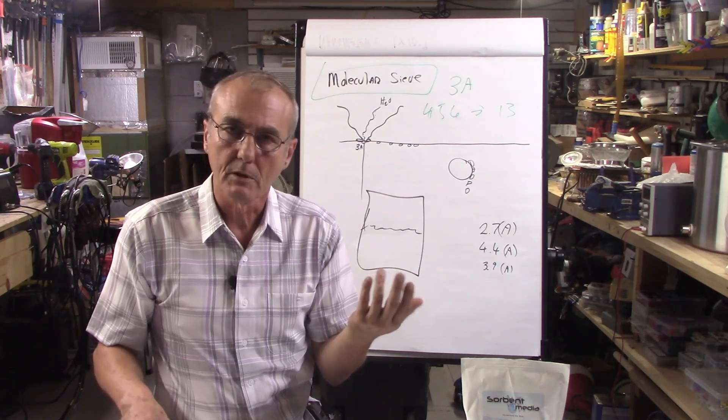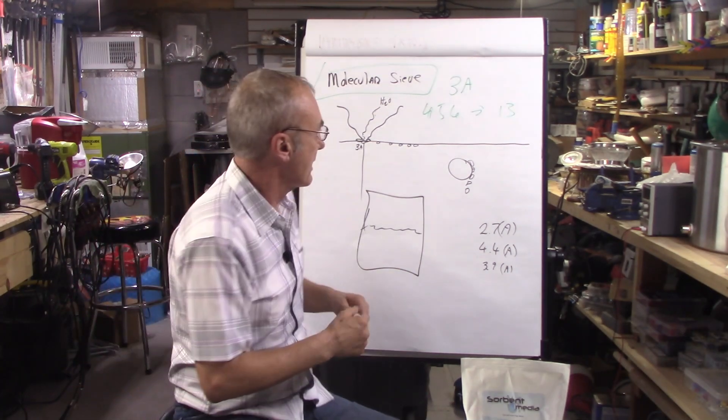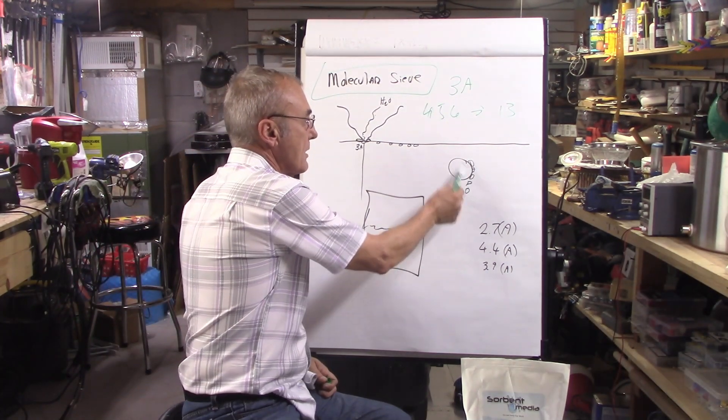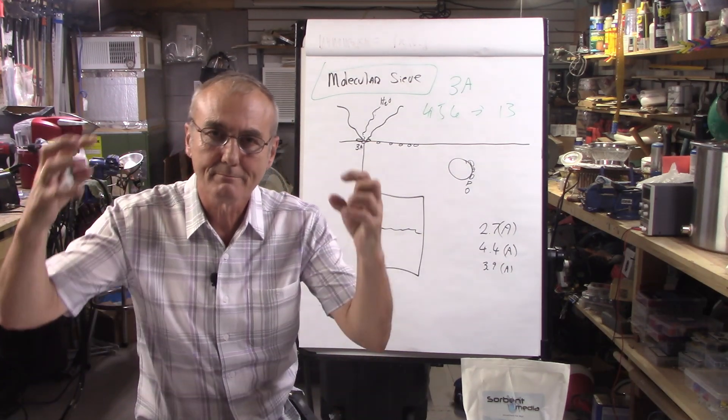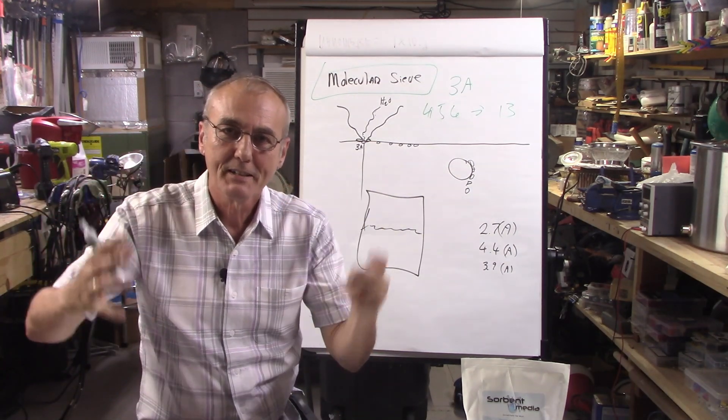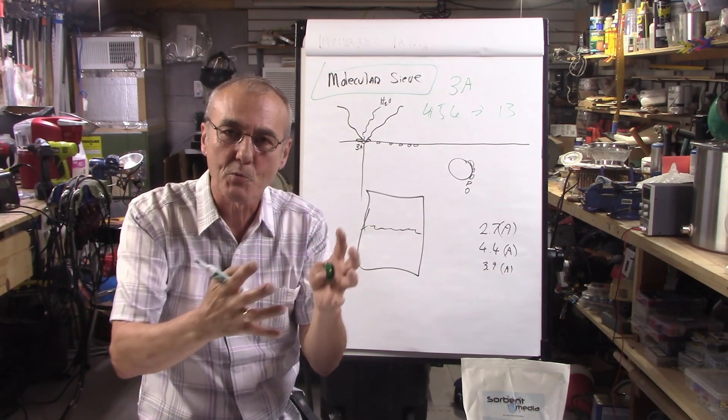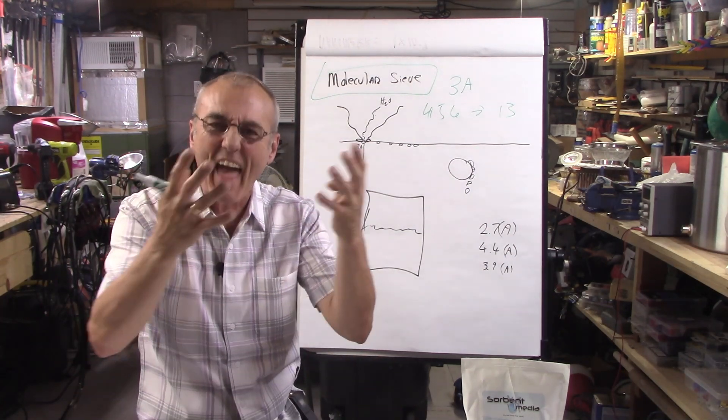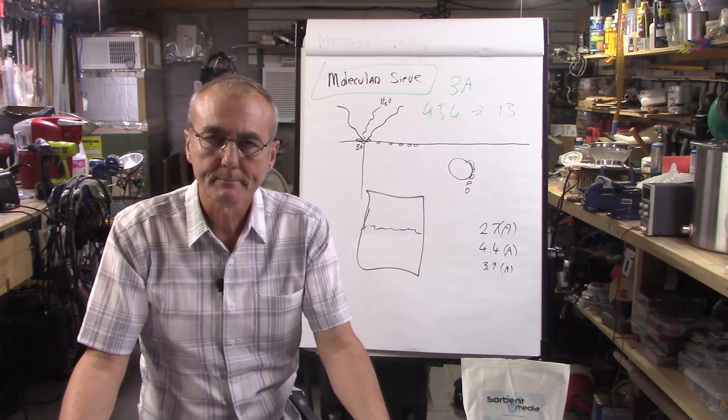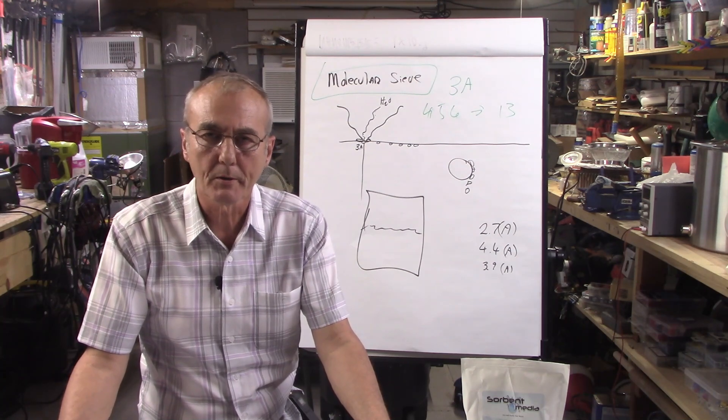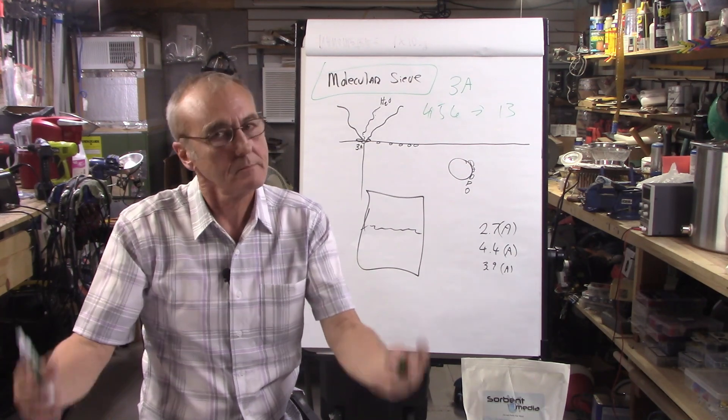Once you pour it off and strain it, you're going to have some molecules that are going to remain on the outside because remember that affinity, that attraction, they're going to hang around the outside of each one of those beads. And that kind of starts to add up. So you're going to lose some.